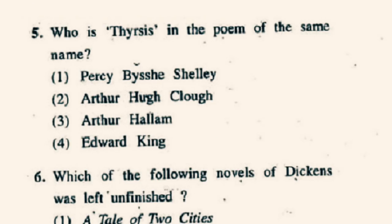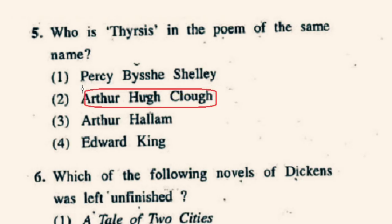Question number 5: Who is Thyrsis in the poem of the same name? Arthur Hugh Clough, a poet and disciple of Dr. Thomas Arnold, was the closest friend of Matthew Arnold when they were young. Matthew Arnold later mourns about Arthur Hugh Clough in his elegy Thyrsis. So the correct option will be 2nd option, Arthur Hugh Clough.